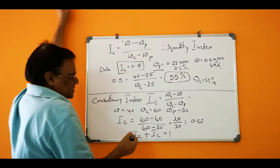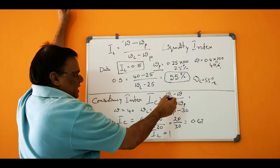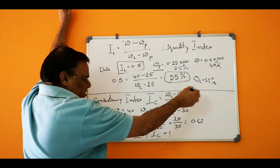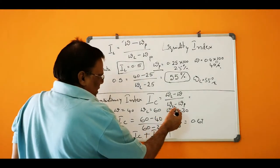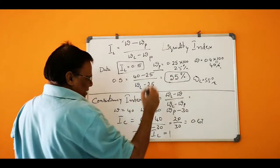Consistency index, IC, is given as liquid limit minus natural water content or water content, divided by liquid limit minus plastic limit.